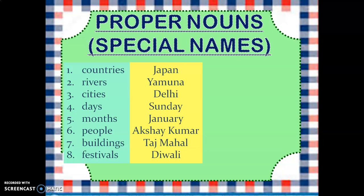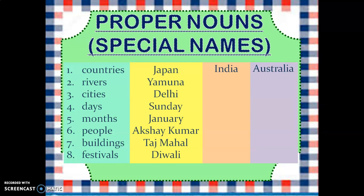If you can see, the first letter of all these proper nouns is written in capital — that is how we write proper nouns. Now an assignment for all of you: in your notebook, make two columns and write the names of two countries, two rivers, two cities, two days, two months, any two persons, two buildings, and two festivals. For example, for countries you can write India and Australia. Similarly, write two rivers, cities, and so on.